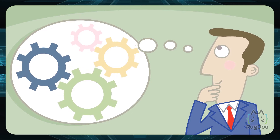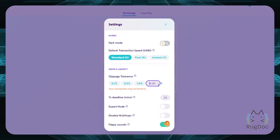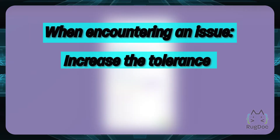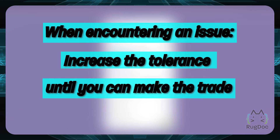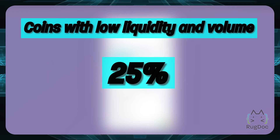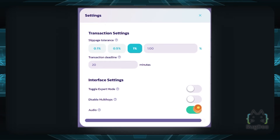So what can you as a yield farmer or cryptocurrency trader do to prevent slippage? Well, you really can't control slippage, but on any exchange there should be a place on the swap page where you can set the slippage tolerance. When encountering a slippage issue, simply increase the tolerance incrementally until you are able to make your trade. Coins with low liquidity and volume may require a slippage tolerance of 25% or even more, especially if you're aping into a coin at launch. If you're using PancakeSwap, for example, you can go to the settings by clicking on the yellow highlighted icon, then go to the transaction settings and input your slippage tolerance — you can even put a custom one depending on however much slippage you want.